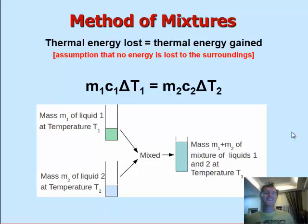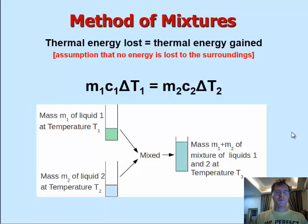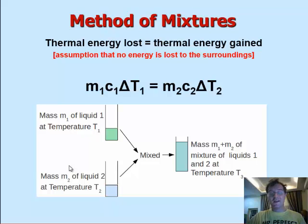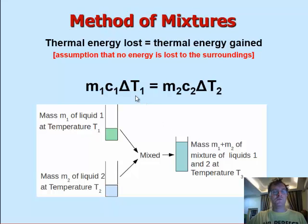There's another way of calculating the specific heat capacity of a liquid and this is known as the method of mixtures. What we can do is if we have a known mass of a liquid at a known temperature and a known mass of another liquid at a different temperature, when they mix they will reach a thermal equilibrium — a third temperature. That means we can work out the change in temperature for liquid 1 and liquid 2, and with that knowledge we can rearrange to find any unknowns present in the formula.